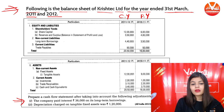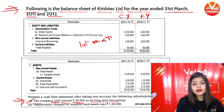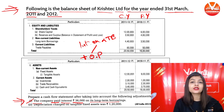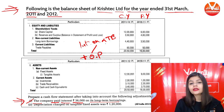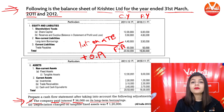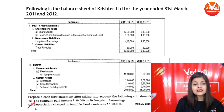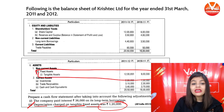First of all, read the additional information. Additional information: the company paid interest of ₹36,000 on its long-term borrowing. This will be added in the operating activity — where you add depreciation and loss on sale of fixed asset — and will be subtracted from financing activity. The second point: depreciation charged on tangible fixed assets is ₹1,20,000.